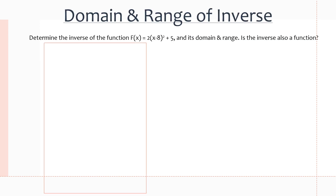In this example, we have to determine the inverse of a function and its domain and range. The function is f(x) = 2(x − 8)² + 5. The first thing we're going to do is replace f(x) with y, giving us y = 2(x − 8)² + 5. Now we need to switch x for y and y for x, so x = 2(y − 8)² + 5. Our goal now is to isolate for the new y.